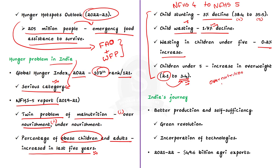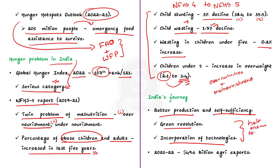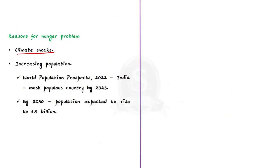India has had an inspiring journey towards better production and self-sufficiency in agricultural production, going through the Green Revolution and incorporating technologies to increase output. India is now one of the largest agricultural product exporters, recording $49 billion in total agricultural exports during 2021-22 — a 20% increase from 2020-21. Yet despite having enough stock to export, climate shocks have raised concerns about India's wheat and rice production, affecting the availability of food grains since agriculture in India is seasonal.